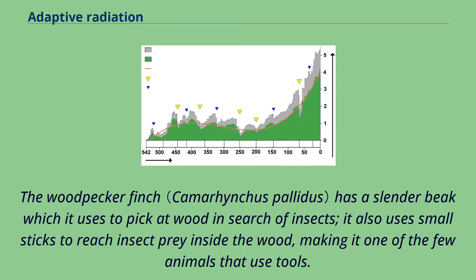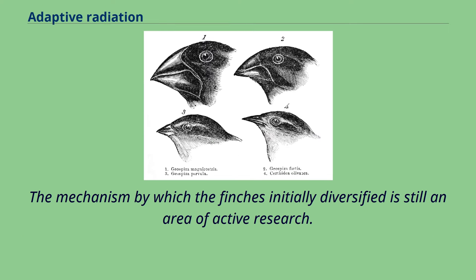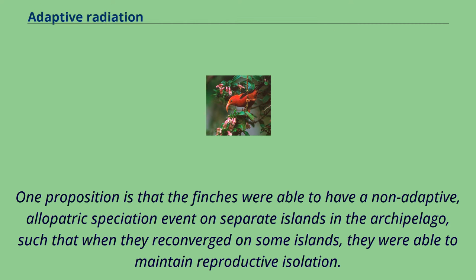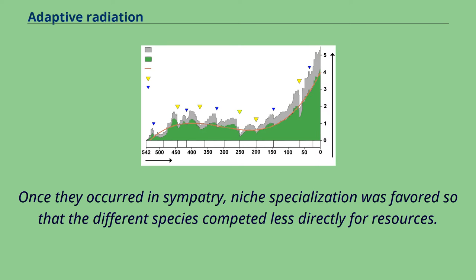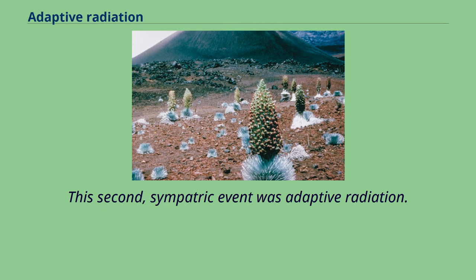The mechanism by which the finches initially diversified is still an area of active research. One proposition is that the finches were able to have a non-adaptive, allopatric speciation event on separate islands in the archipelago, such that when they reconverged on some islands, they were able to maintain reproductive isolation. Once they occurred in sympatry, niche specialization was favored so that the different species competed less directly for resources. This second, sympatric event was adaptive radiation.